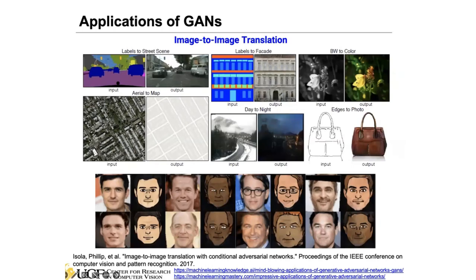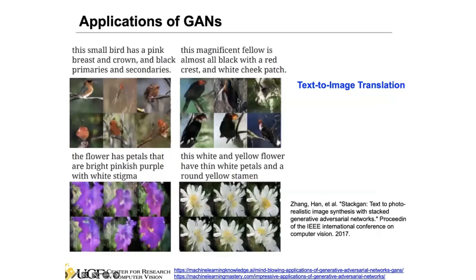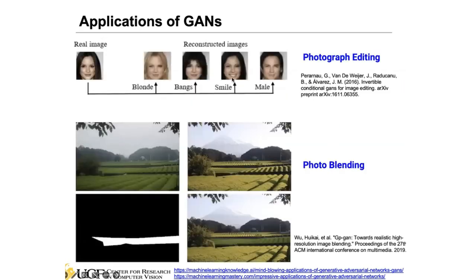Another example is satellite aerial imagery to map translation. We also have day-to-night translation: given a daytime image, generate the corresponding nighttime scene. There's also sketch-to-photo translation. The list goes on — many applications relate to image-to-image translation. We can also do text-to-image translation: given a text description like 'this small bird has a pink breast and crown with black primaries,' we generate images fitting that description.